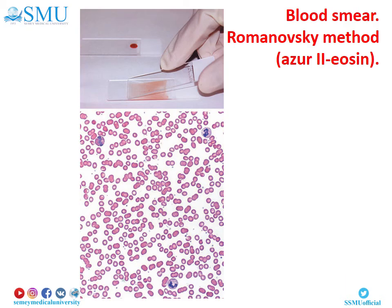In this slide, you can see a blood smear stained by the Romanowski method. The Romanowski method includes dyes Azure II and eosin. In this slide, you see a great number of RBCs – erythrocytes – which are oxyphilic. A few white blood cells are also visible; these are neutrophilic leukocytes.